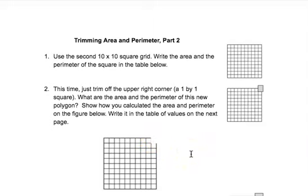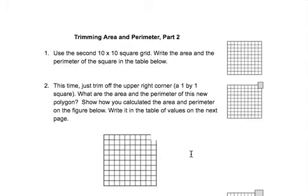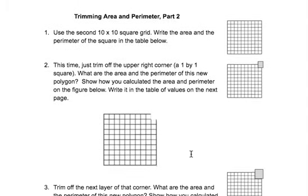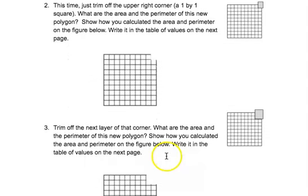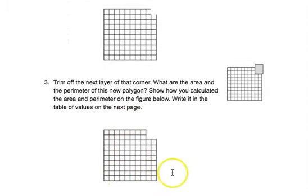Now you're going to calculate the area and the perimeter of the polygon and then show how you calculated it. Then you're going to trim off the next layer of that corner. So now it's going to look like a 2 by 2 was trimmed off in the corner. Again, you're going to find the area and the perimeter for your new polygon.